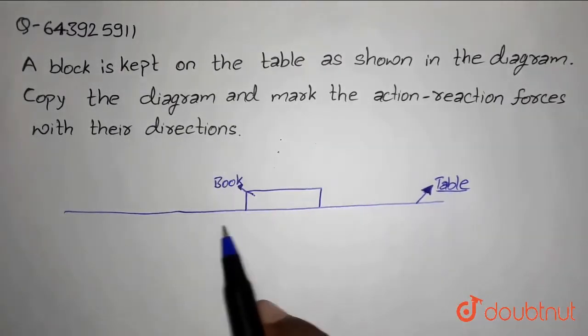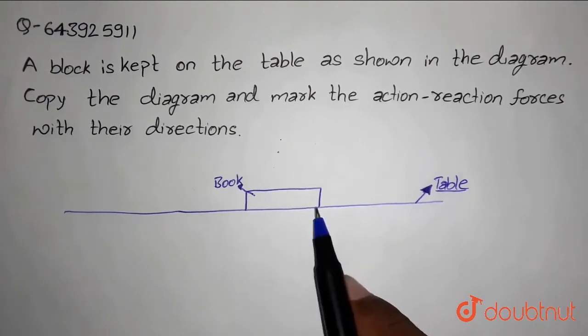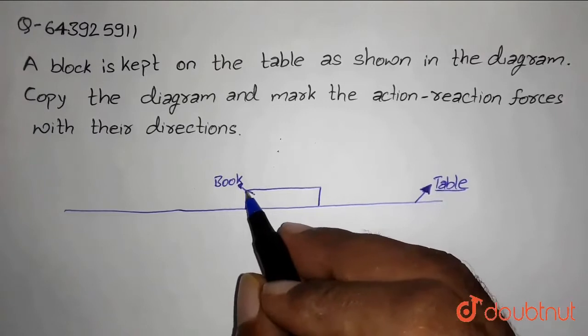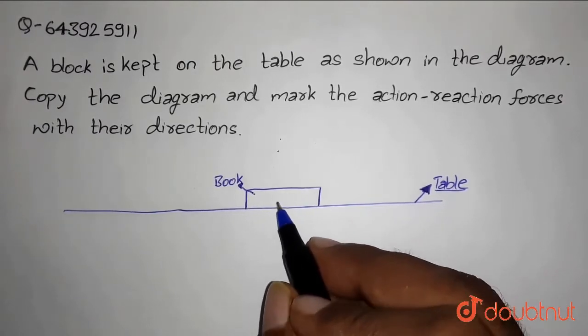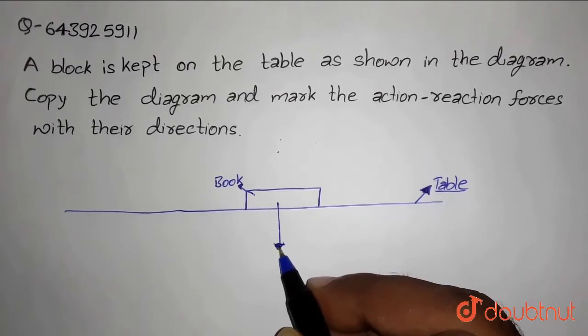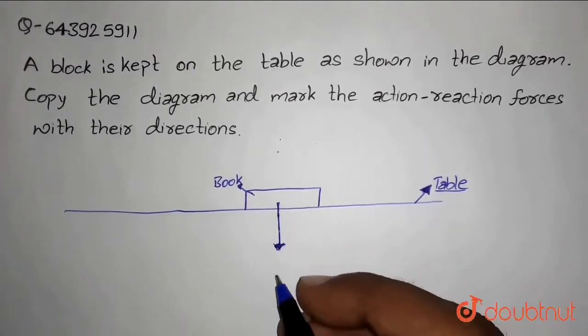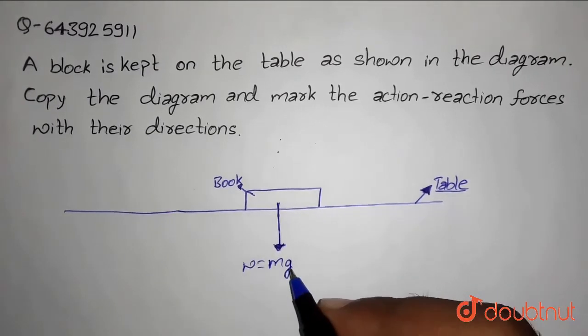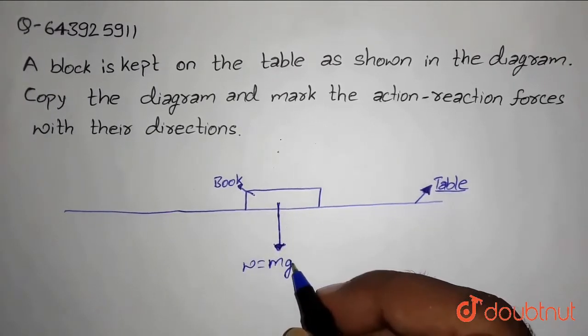So here we have the diagram - a table with a book kept on it. As we know, since it is on the table, a gravitational force will work on it, equal to its weight in downward direction, that is mg. This is a weight force acting in the downward direction.